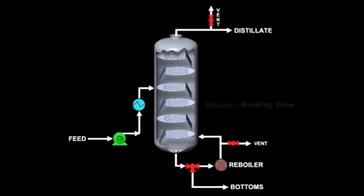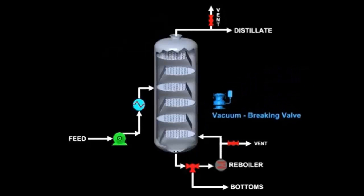Locate vacuum braking valves at the bottom of the column for vacuum columns. The reasoning is the same as with relief valves.